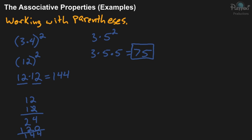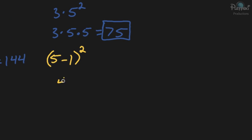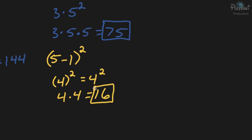One more example using parentheses: we'll do (5 minus 1) squared. In this case, we do whatever is inside the parentheses first and then square it. 5 minus 1 is 4, so we can rewrite this as 4 squared. That's just 4 times 4, which is 16. That's working with parentheses.